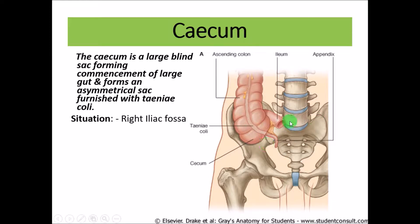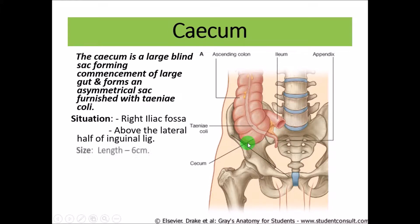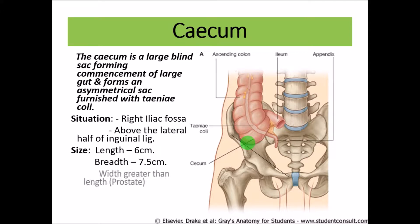Situation: the cecum is present in the right iliac fossa, above the lateral half of the inguinal ligament. The size is almost 6 cm in length and 7.5 cm in breadth. This is very peculiar — the other organ where the length is lesser than the breadth is the prostate.